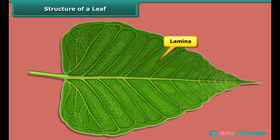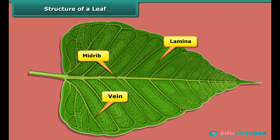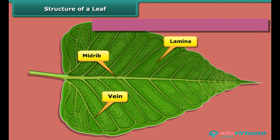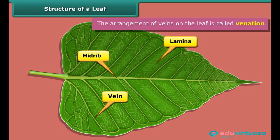The lamina is green in color. The thick line present in the middle of a leaf is called the midrib. The thin lines branching from the midrib are the veins.